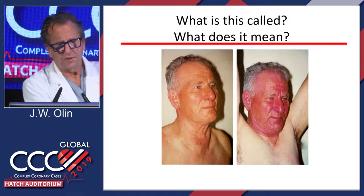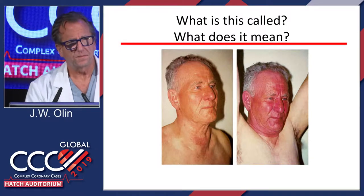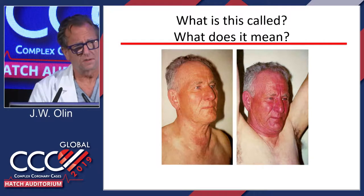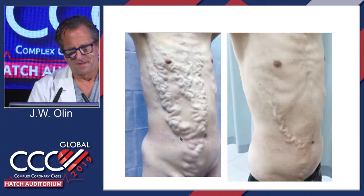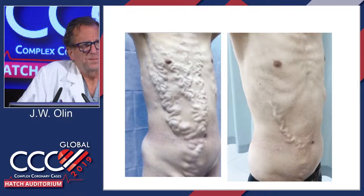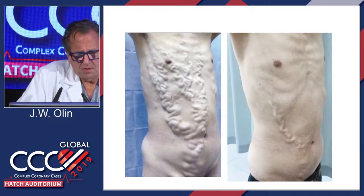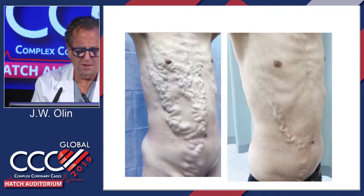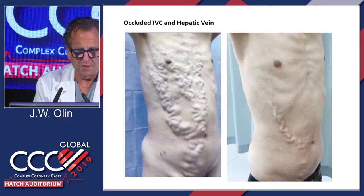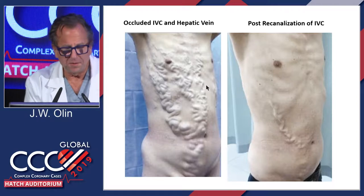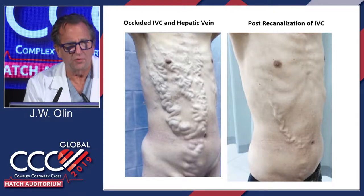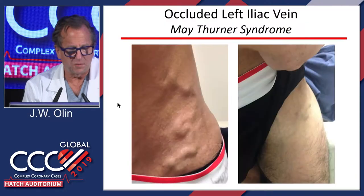This is occlusion of the IVC and the hepatic vein. You wouldn't know that just from looking at the patient. When you restore flow to the IVC, the collaterals, for the most part, disappear. It's amazing how many people you see with this where somebody tries to do something with these collaterals, which would obviously be devastating.